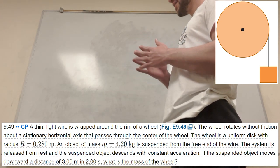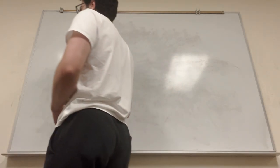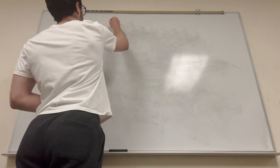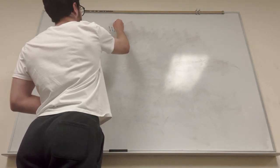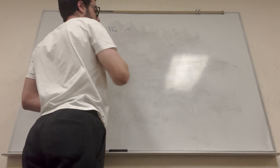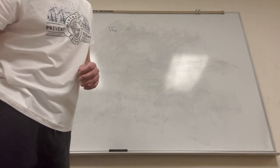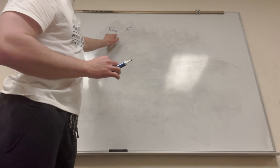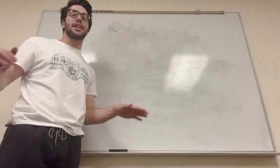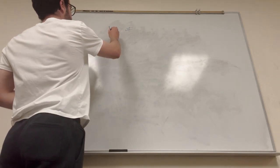So when you have a pulley problem — really when you have any problem in physics — what I like to do is use the work-energy theorem. The work-energy theorem says that the non-conservative work (that's what 'NC' means) is equal to the change in energy. This problem specifically states no friction, so work non-conservative — usually the work done by friction, air resistance, whatever — we're not calculating any of that. So we're going to say that work non-conservative is equal to zero.